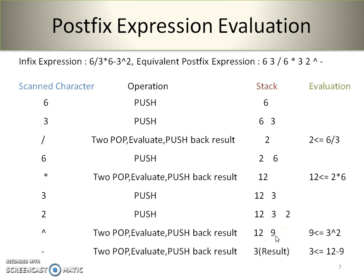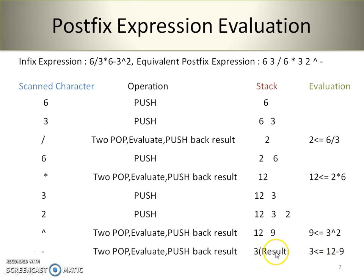The last character scanned from the postfix expression is the minus operator. We perform two consecutive pop operations — the values are 9 and 12. 9 is the first popped operand and 12 is the second popped operand. Performing subtraction: 12 minus 9 gives a result of 3. We push the result back onto the stack, and a single value remains, which is the evaluation result of the given postfix expression.